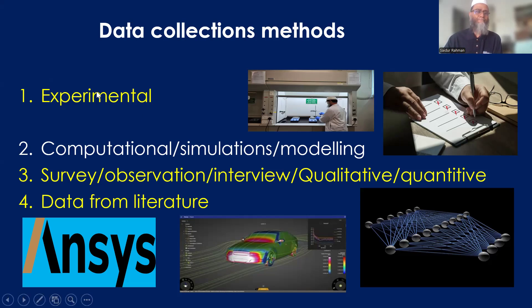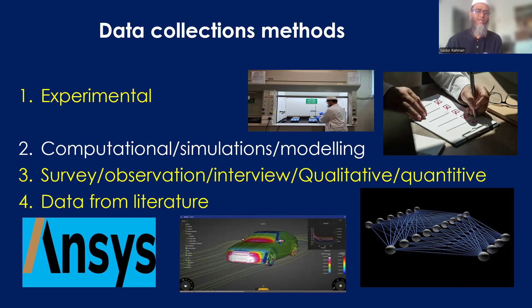However, experimental methods can be very expensive because expensive equipment is needed. The second approach is computational simulation and modeling. Since sometimes experimental facilities are not available and experiments are also time-consuming, computational facilities using high-end computers, modeling tools, and simulation tools such as ANSYS, TRNSYS, artificial neural networks, MATLAB, and SPSS are used. There are a number of computational, numerical, and simulation models available, and there can also be analytical approaches to generate data.